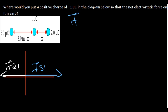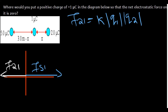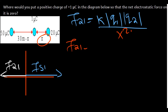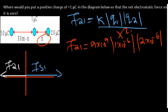Now we can find the force. Let's start with F₂₁. This is going to be K times Q₁ (1 microcoulomb) times Q₂ (2 microcoulomb), everything divided by R squared, and in this case our R is X, so we divide by X squared. Plugging in values: 9×10⁹ times 1×10⁻⁶ times 2×10⁻⁶, all divided by X squared. The numerator gives 0.018.